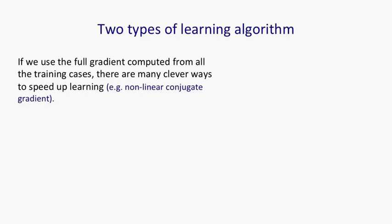So basically there's two types of learning algorithms for neural nets. There's full gradient algorithms, where you compute the gradient from all of the training cases, and once you've done that, there's a lot of clever ways to speed up learning. There's things like non-linear versions of a method called conjugate gradient.